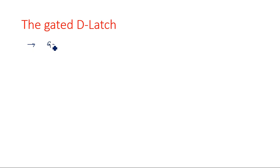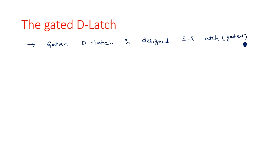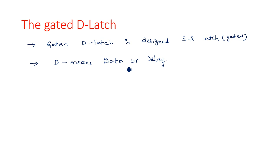In this video I am going to explain about the Gated D Latch. The Gated D Latch is made from SR latch or SR gated latch. D here stands for data — sometimes also referred to as delay latch. If it is a flip-flop, it is called a data flip-flop or delay flip-flop.